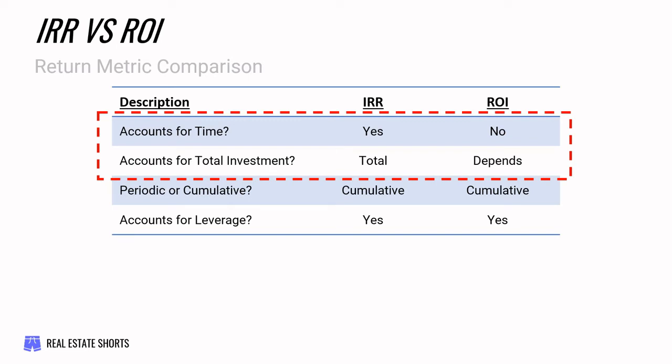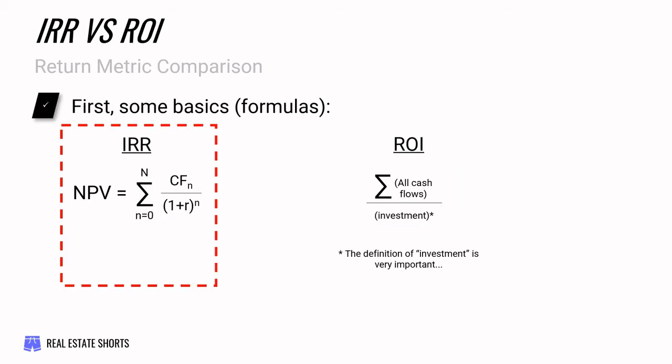Let's dive into each one individually. Internal rate of return is, at its core, the discount rate that makes the net present value equal to zero — the sum of all the discounted cash flows from time period zero through time period n. That distinction is important because we are talking about discounting, and the effect that time has on the receipt or payment of each one of these cash flows.